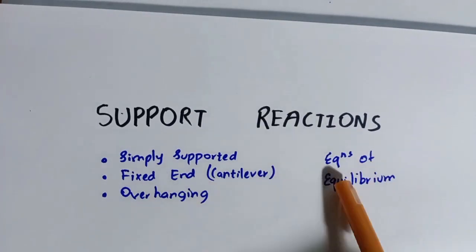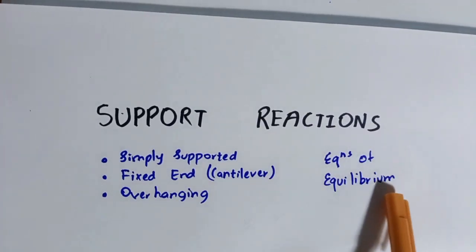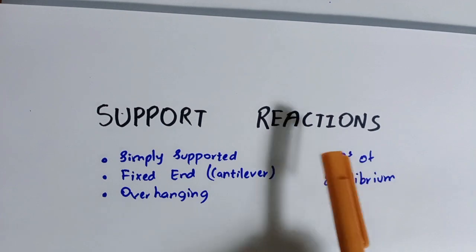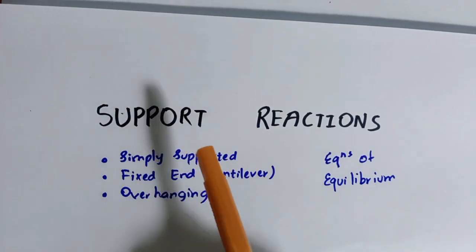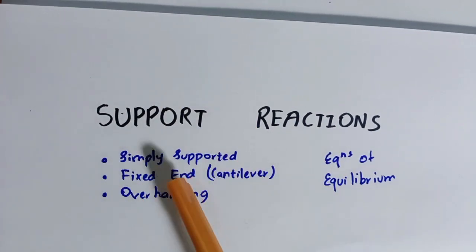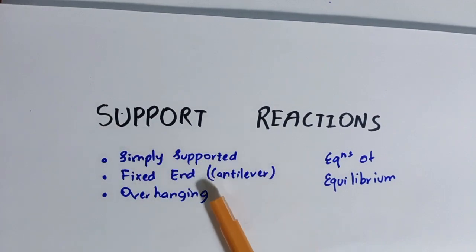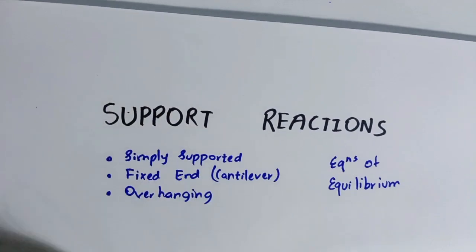In this video, we'll find out how to use the equations of equilibrium to determine the support reactions in a simply supported beam, a fixed end (also called a cantilever beam), and an overhanging beam. Without further ado, let's get to the first question.